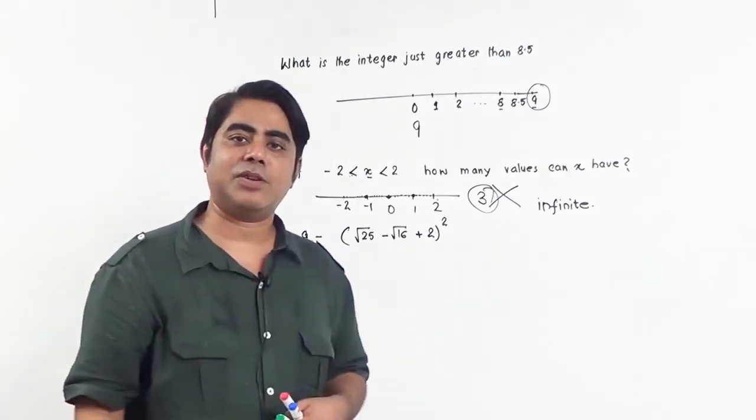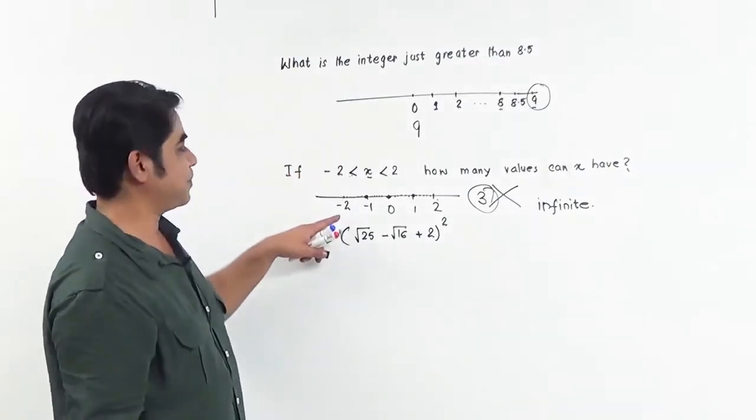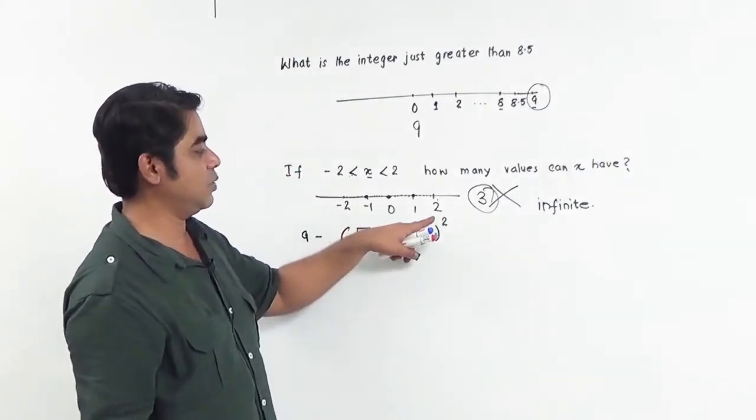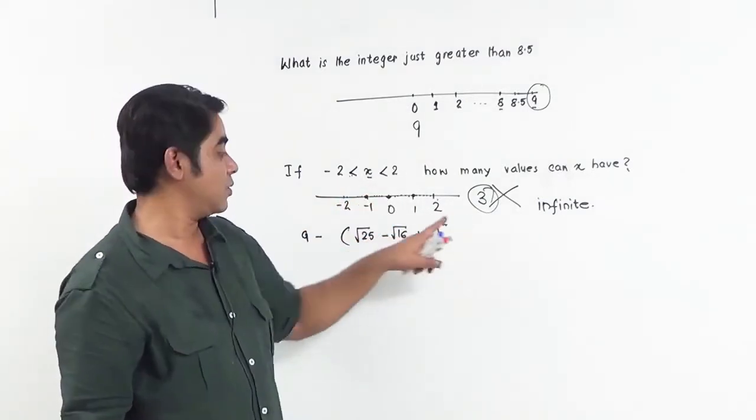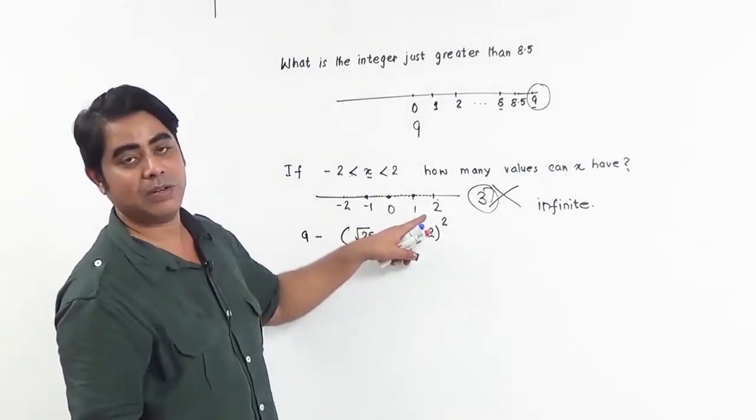So similarly, from minus 2 to plus 2, if x lies between minus 2 and plus 2, it can have infinite values, not three values: minus 1, 0, and 1.